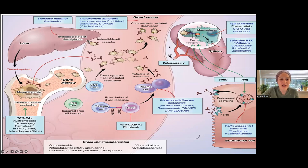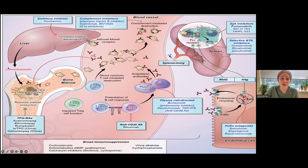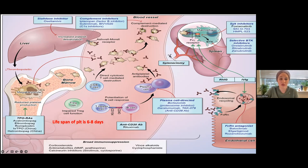In normal physiology, the liver produces TPO, which goes to the bone marrow and induces megakaryocytes to produce platelets. Platelets then go into the blood, live there for six to eight days, and are consumed by the spleen. This is how the system normally works.